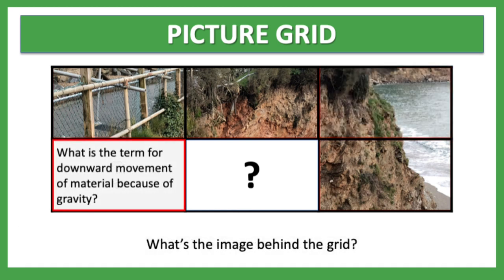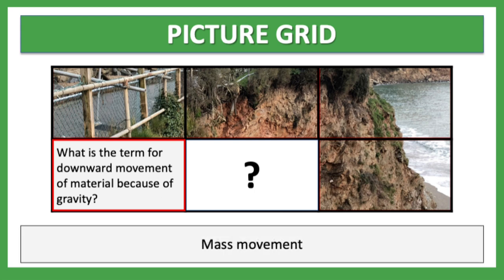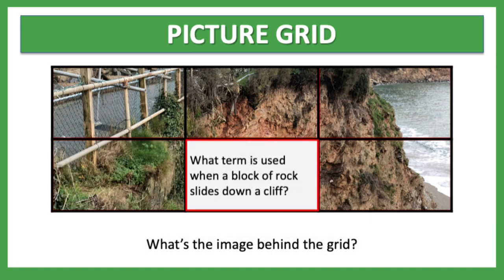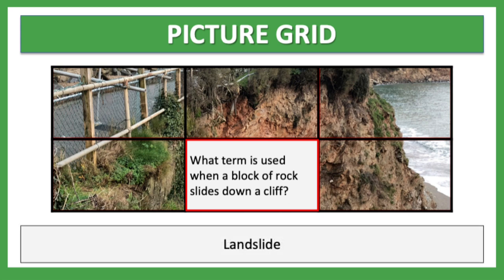Question five: what is the term for the downward movement of material because of gravity? It is mass movement. There are lots of different types — you can have slumping and rockfall, for example. Question six: what term is used when a block of rock slides down a cliff? This is a type of mass movement — it's called a landslide.